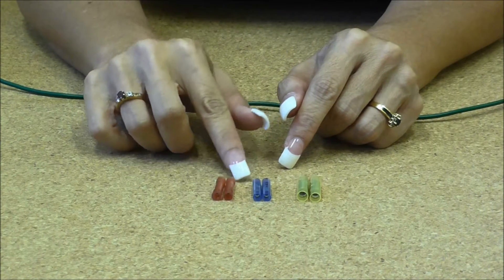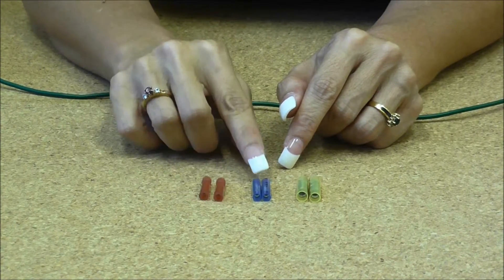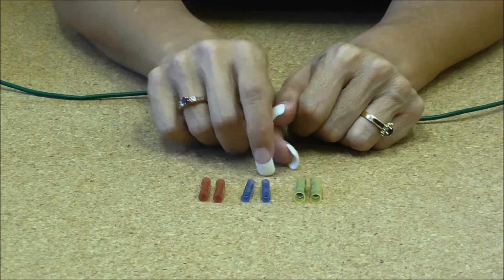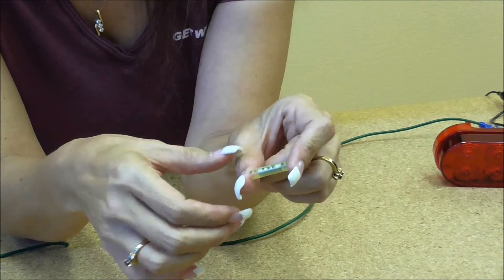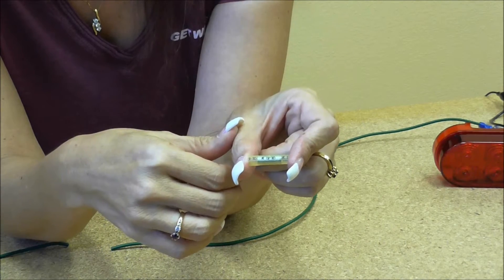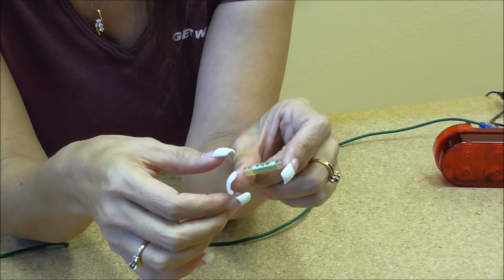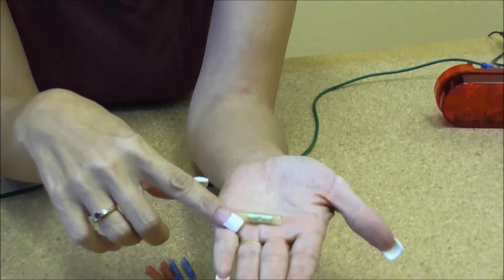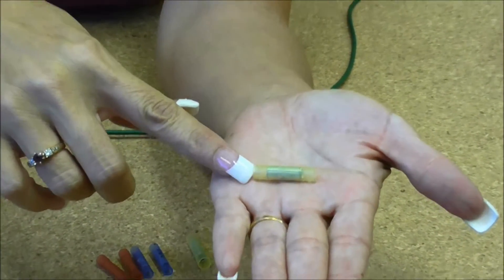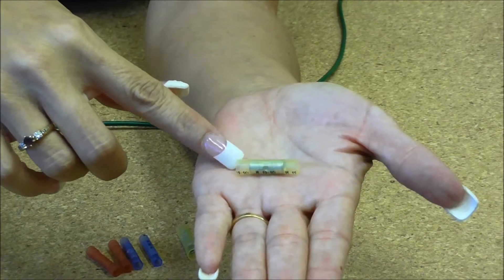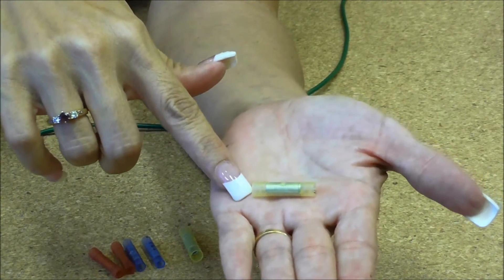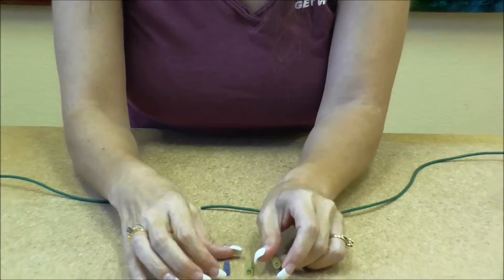These are 20 to 18 gauge, these are 16 to 14, and these are 12 to 10 gauge nylon butt splices. If you can see really close, they are see-through, so you can actually see the metal inside and then the nylon coating over the top.